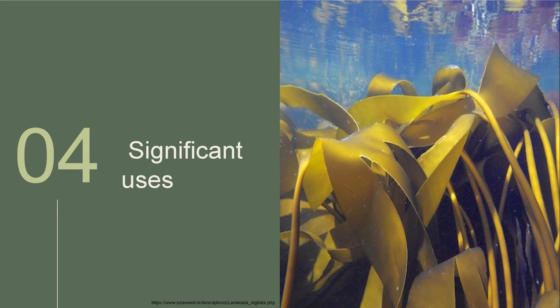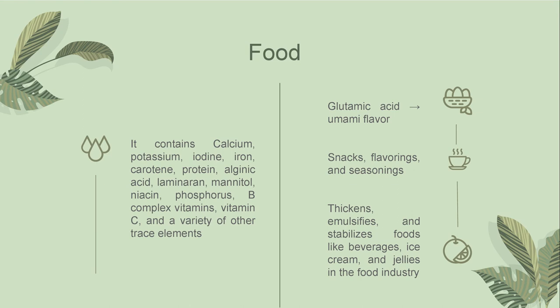Let us now dive into the significant uses of this species. The reason I chose this species is due to the overflowing benefits it provides from different aspects of the economy and ecology. Starting with food, Laminaria digitata is a great food source since it contains a lot of vitamins, minerals, and trace elements — including calcium, potassium, iodine, iron, carotene, protein, alginic acid, laminaran, mannitol, niacin, phosphorus, B-complex vitamins, vitamin C, and a variety of other trace elements. Moreover, Laminaria digitata is high in glutamic acid, an amino acid that gives it its umami flavor.